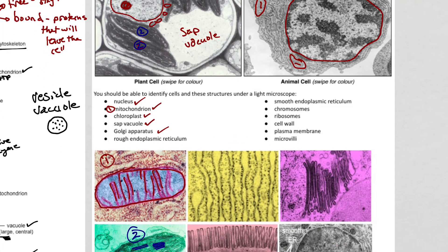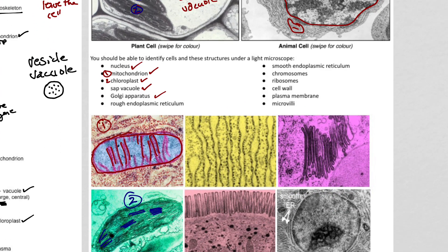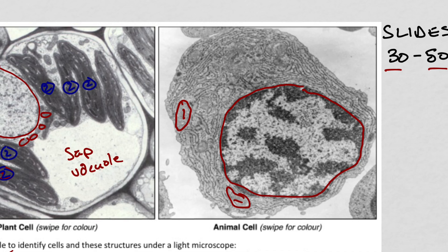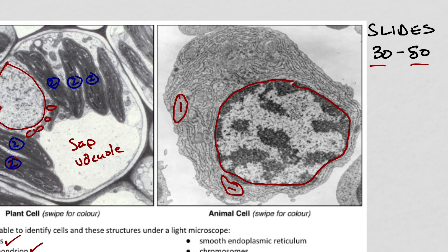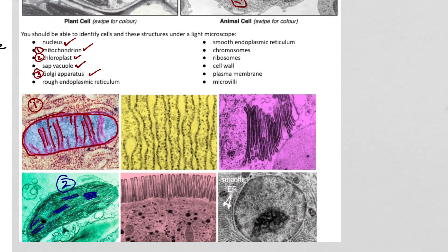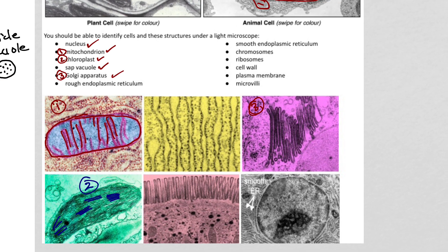The Golgi apparatus — that's going to be number three. It's a little tough to see in our big animal cell, but we can see our Golgi body right down here. A lot of people nowadays say it looks like the Wi-Fi signal. When I was taught this, I was taught it looks like a stack of pancakes.